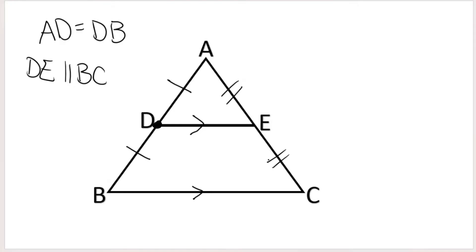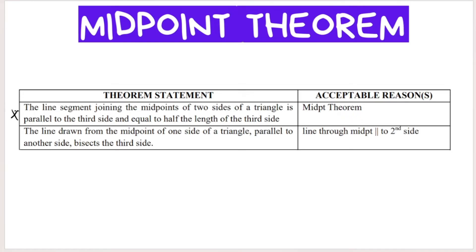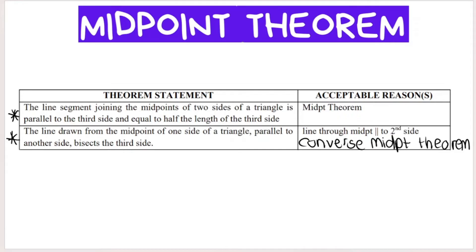I just want to make sure you understand the difference between the information given. The first scenario uses the reason midpoint theorem. The second scenario — some teachers use 'converse midpoint theorem', but other teachers use 'line through midpoint parallel to second side'. The reason 'line through midpoint parallel to second side' is the one officially listed in the grade 12 exam guidelines. So let me re-explain using the two scenarios: when do I use midpoint theorem, and when do I use line through midpoint parallel to second side? It depends on the information given.